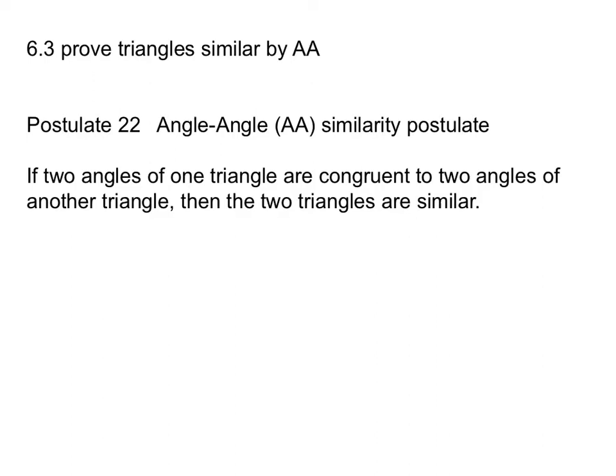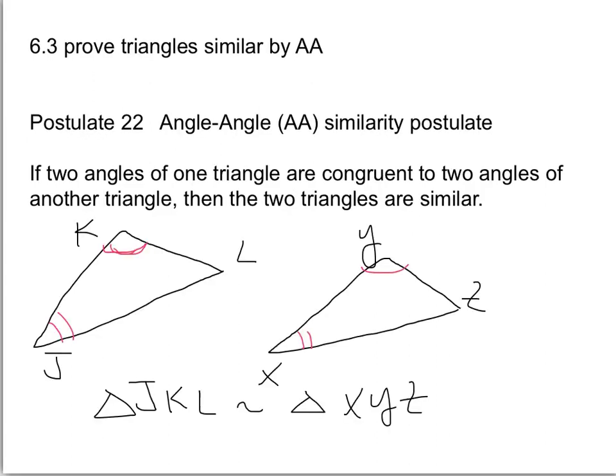Let me push pause and draw a picture real quick. So here I have triangle JKL is similar to triangle XYZ. JKL, I have J with two arcs, K with one, is similar to XYZ, two marks and one. So I have an angle similar and an angle congruent, so the triangles are similar.